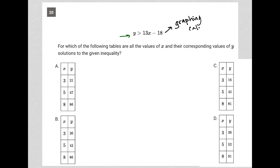And then using that visual to help answer the question. So the question goes on to say, for which of the following tables are all the values of x and their corresponding values of y solutions to the given inequality?